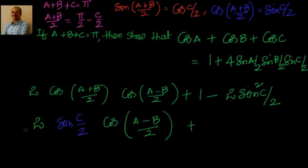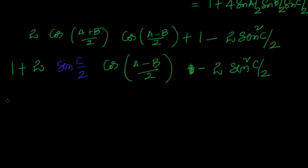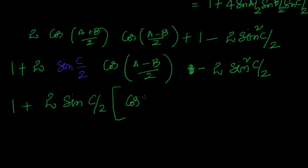Plus 1, I can take it to the beginning. This becomes minus 2 sin²(c/2). Now we can take 2 sin(c/2) common.